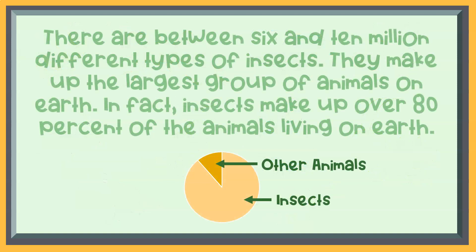There are between six and ten million different types of insects. They make up the largest group of animals on Earth. In fact, insects make up over 80% of the animals living on Earth. The dark yellow shows other animals, and the light yellow shows insects.